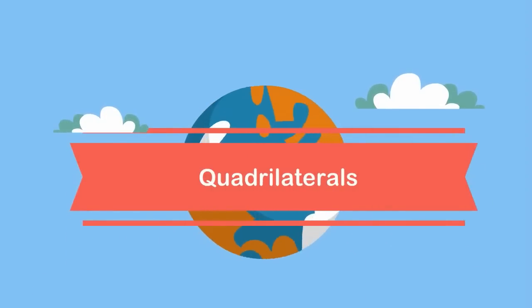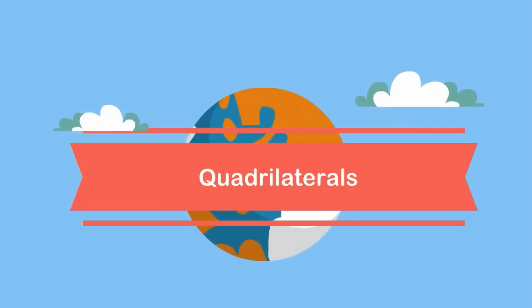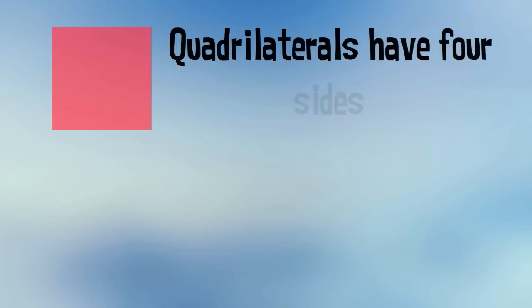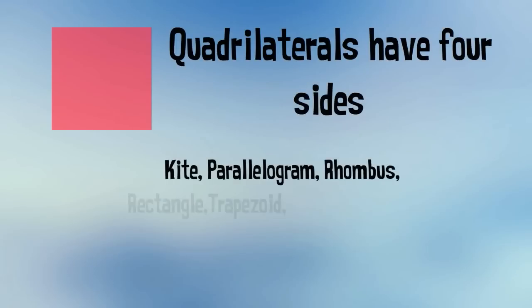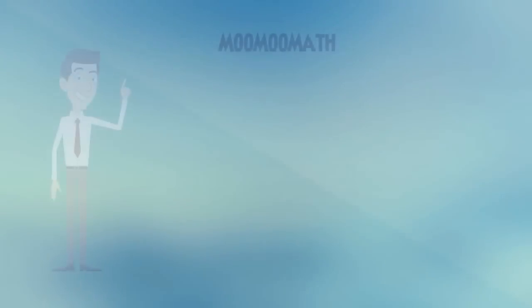Welcome to Math and Science. In this video I'd like to look at quadrilaterals. All quadrilaterals have four sides. In this video we will look at a kite, a parallelogram, a rhombus, a rectangle, a square, a trapezoid, and an isosceles trapezoid. Let's get started.